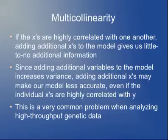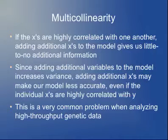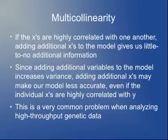Quick review: what is multicollinearity? The idea is that you have a series of X variables that are strongly correlated with one another. If you have three Xs that are almost perfectly correlated, having one X gives you pretty much all the information you're going to get about Y. Adding a second X doesn't tell you much more about Y — in fact it can make your predictions worse because it adds more variance without giving you additional information. This is especially common when dealing with modern high-throughput genetic data, where you have a very large number of possible predictor variables.